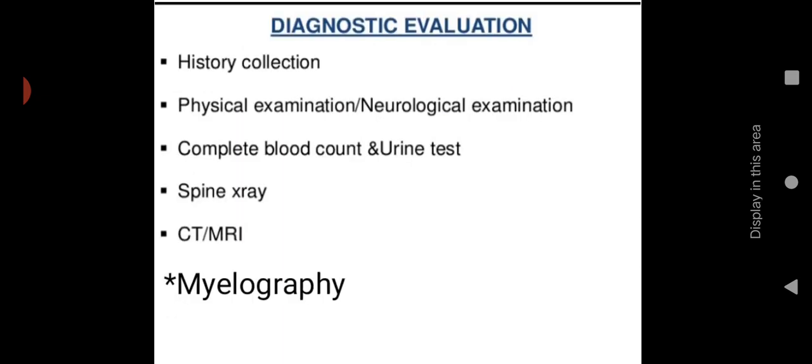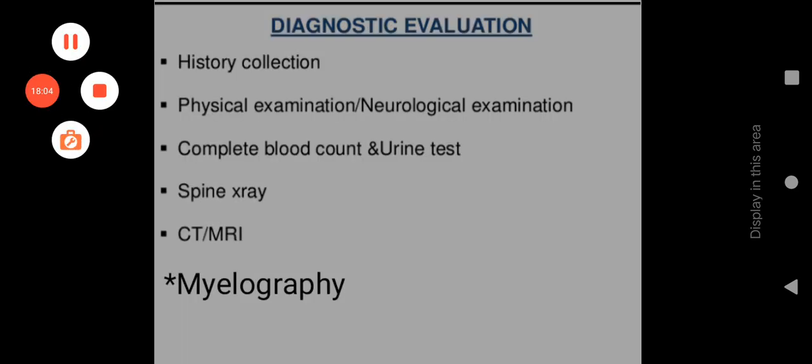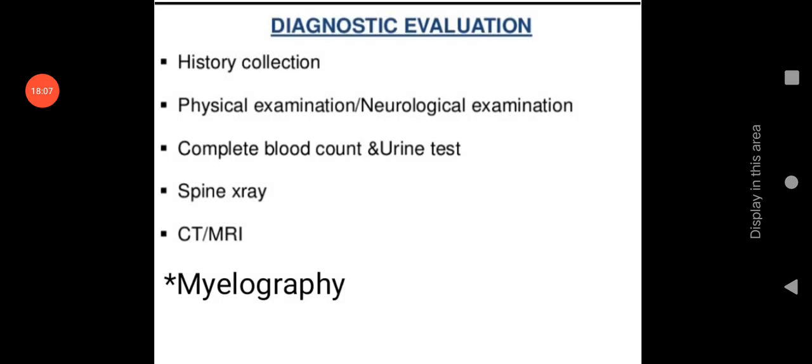Diagnostic evaluation includes history collection, physical examination, complete neurological examination, complete blood count and urine test, spinal X-ray to identify the area of injury, CT and MRI to evaluate severity of injury, and myelography to study muscle fiber and nerve fiber function. Management will be covered in the next class.